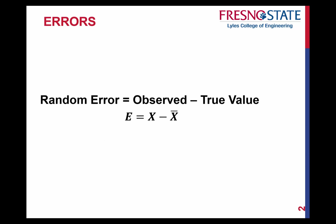In the past we talked about error being equal to observed minus true value. Now I've called it random error. The reason I'm writing it random error is because total error included everything — it included systematic errors, and any mistakes or blunders within there. It included everything.